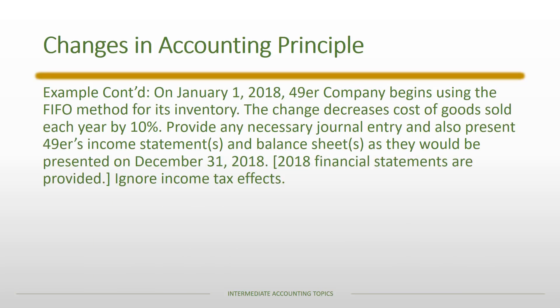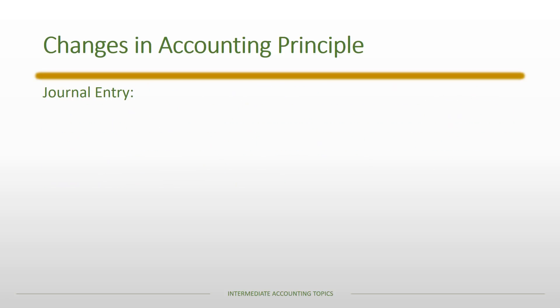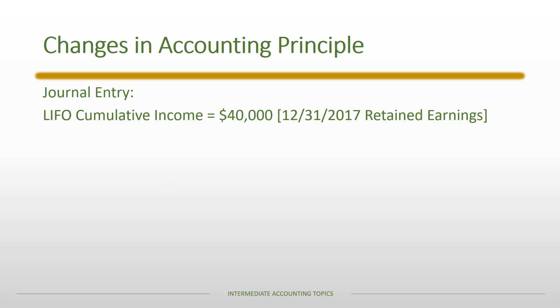On January 1st, 2018, 49er Company begins using the FIFO method rather than LIFO. The change decreases cost of goods sold each year by 10%. We need to provide any necessary journal entries and present 49er's income statements and balance sheet as they would appear on December 31st, 2018 — including understanding what other years must also be presented. For this problem we will ignore income tax effects, though the second problem will include them.